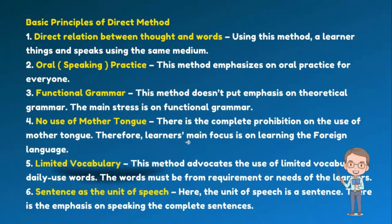Ada beberapa basic principles of direct method. Pertama, direct relation between thought and words — ada hubungan langsung antara apa yang dipikirkan dengan yang diucapkan. Biasanya direct method menggunakan teaching aids seperti gambar. Direct method mengajarkan siswa secara langsung tanpa menggunakan bahasa ibunya. Misalkan guru bahasa Inggris tidak mentranslasikan, tapi menunjukkan gambar — misalkan 'apple' diperlihatkan gambar apple, 'refrigerator' diperlihatkan gambarnya, bukan diterjemahkan sebagai 'kulkas'.